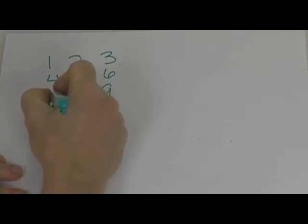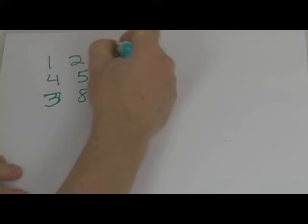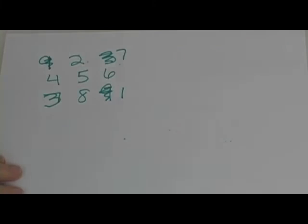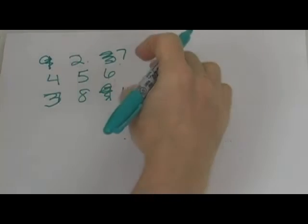Then you swap the corners, you put the 3 here and the 7, you put the 1 here and the 9. And then you kind of squish it.